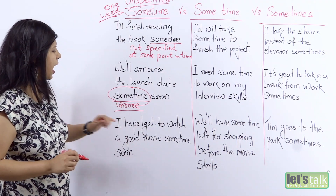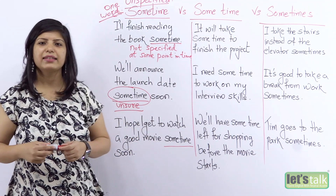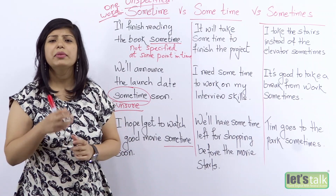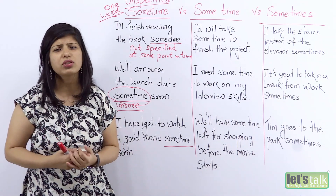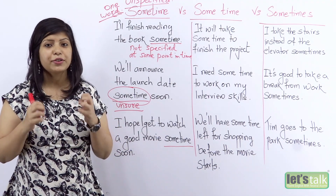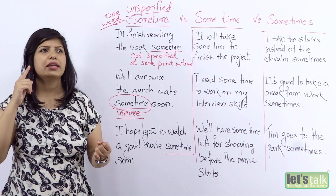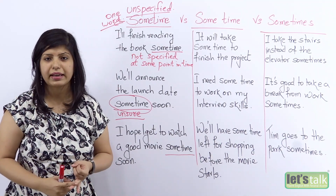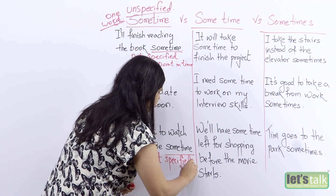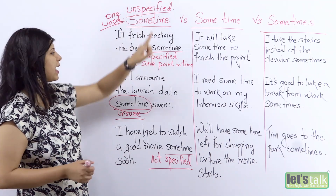Next example: 'I hope I get to watch a good movie sometime soon.' If you are a movie lover and off lately there haven't been any good movies released, when you meet your friends you would say 'I really hope that I get to watch a good movie sometime soon.' You're not sure about that sometime — it is some particular point in time which you're unsure of. Maybe next month, maybe next Friday — completely unsure, not specified. I hope it's clear how to use the word sometime: one word, unspecified, some point in time.